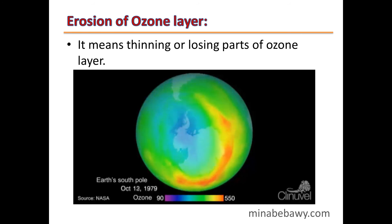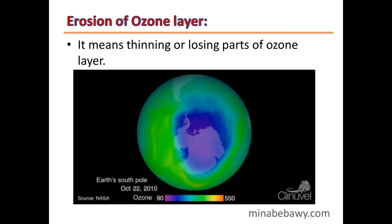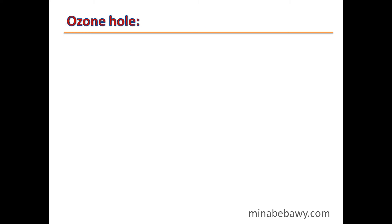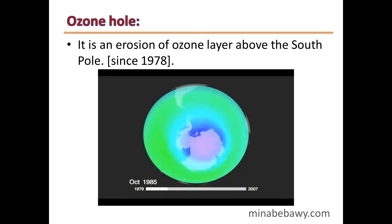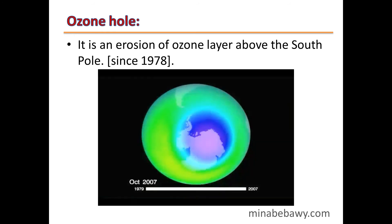What is meant by erosion of the ozone layer? Since 1978, the thickness of the ozone layer has been decreasing. Erosion of the ozone layer means thinning or losing parts of the ozone layer. The ozone hole is an erosion of the ozone layer above the South Pole since 1978, and the size of the ozone hole increases year after year.